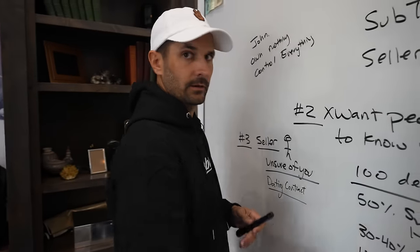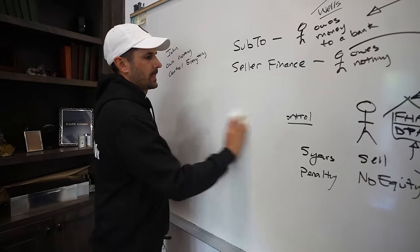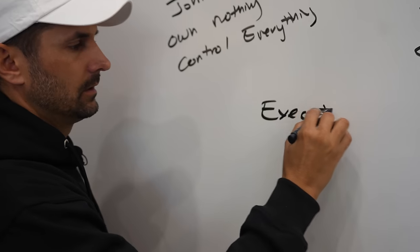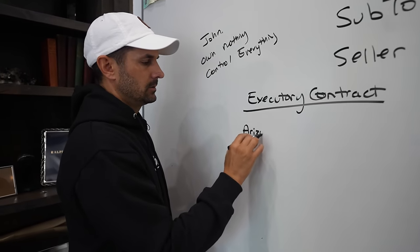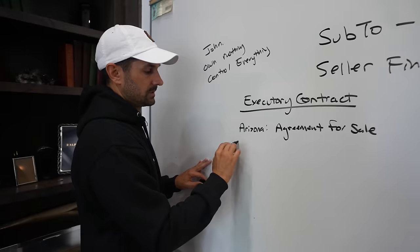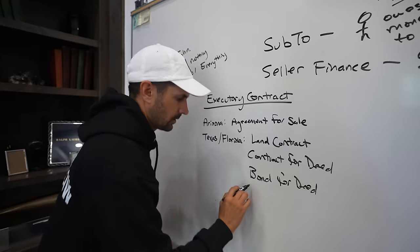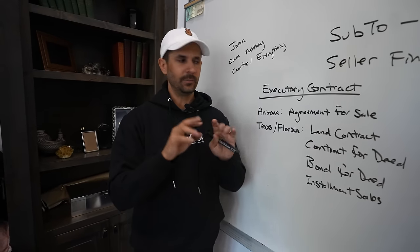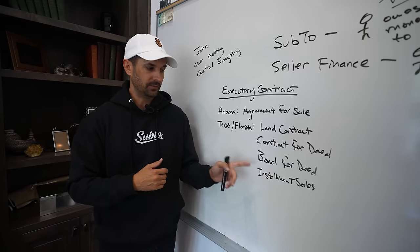One more thing you need to understand: executory contracts aren't actually called that in every state — they're called something different depending on where you are. In Arizona, we call them an 'agreement for sale.' In Texas or Florida, you might use a land contract, also called a contract for deed. You've also got bond for deed and installment sales — about five different names for these. If you go on Google and type 'executory contracts' plus your state, it'll tell you what yours is called.